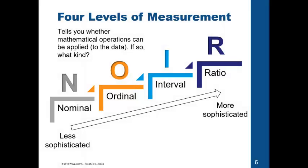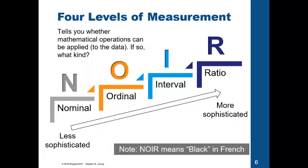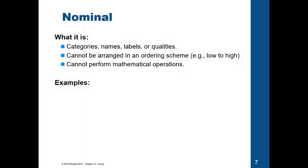So, four levels of measurement tells us whether mathematical operations can be applied to the data, and if so, what kind. Again, we have the four levels of measurement here, and an easy way to memorize this is through this acronym, NOIR, which means black in French. Again, nominal is the least sophisticated. Ratio is the most sophisticated. Let's go through each one of these, one by one.